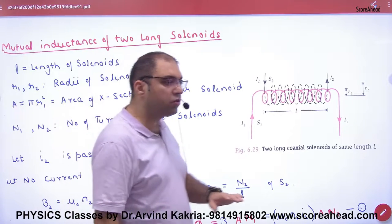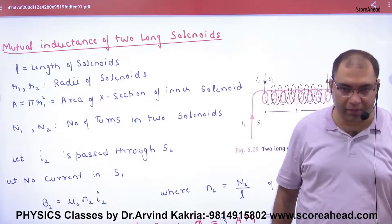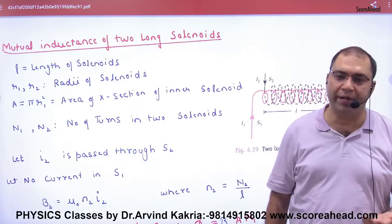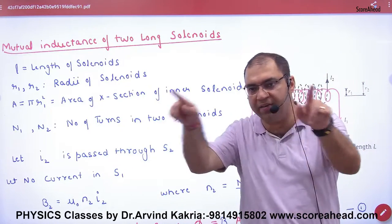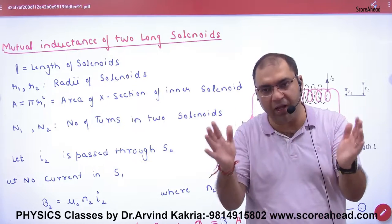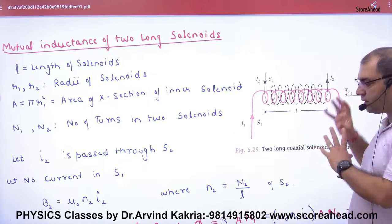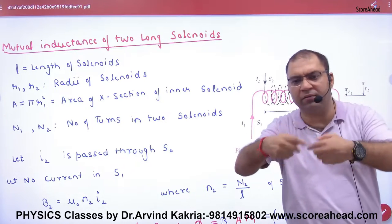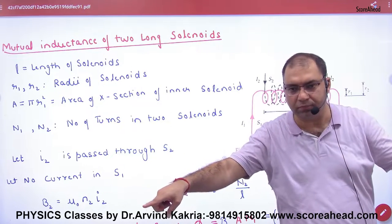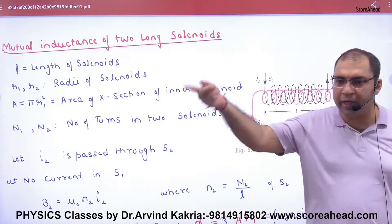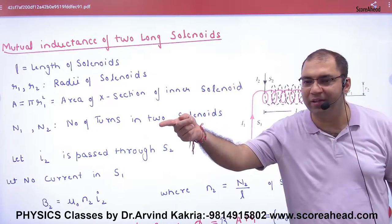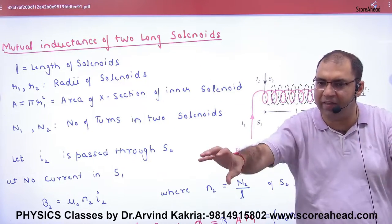Mutual inductance of two long solenoids. Mutual inductance or coefficient of mutual inductance, this is the symbol M. We want to derive M of two coils. Rule number one: when you take two inductors or solenoids, keep one axis common. This will be a benefit if you keep a distance.